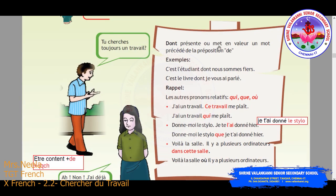Now we are going to see about the pronoun relative simple 'dont'. 'Dont' represents — it gives the value of a noun or word which is followed by the preposition 'de'. See the examples: 'c'est l'étudiant dont nous sommes fier' and 'c'est le livre dont je vous ai parlé.'